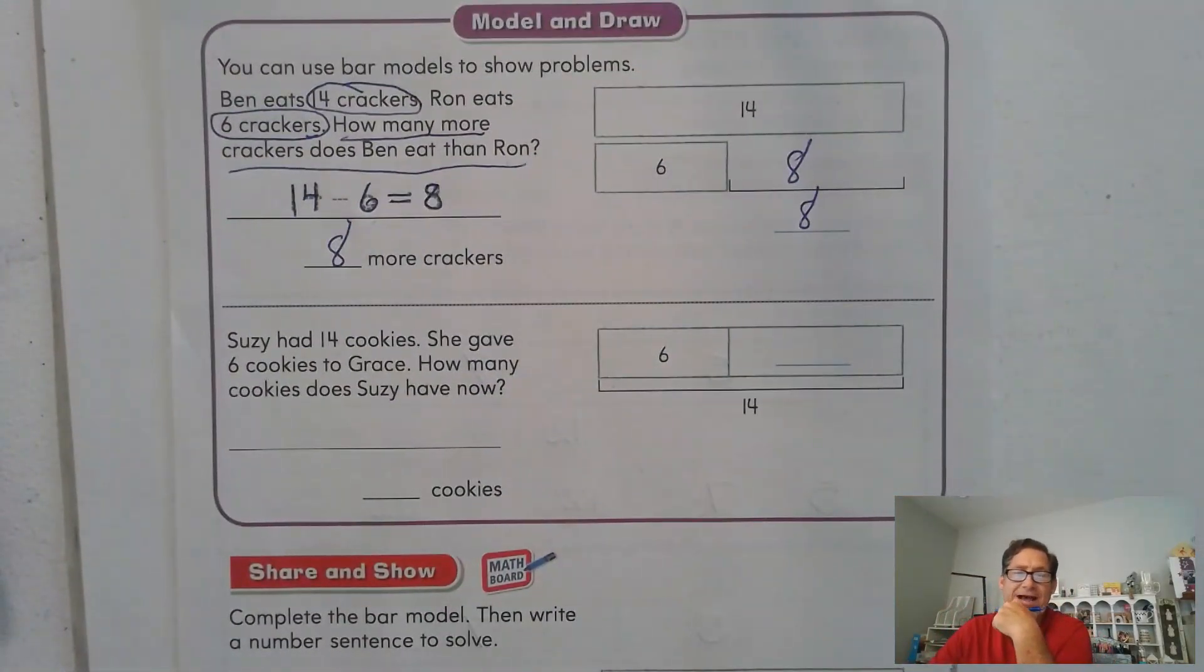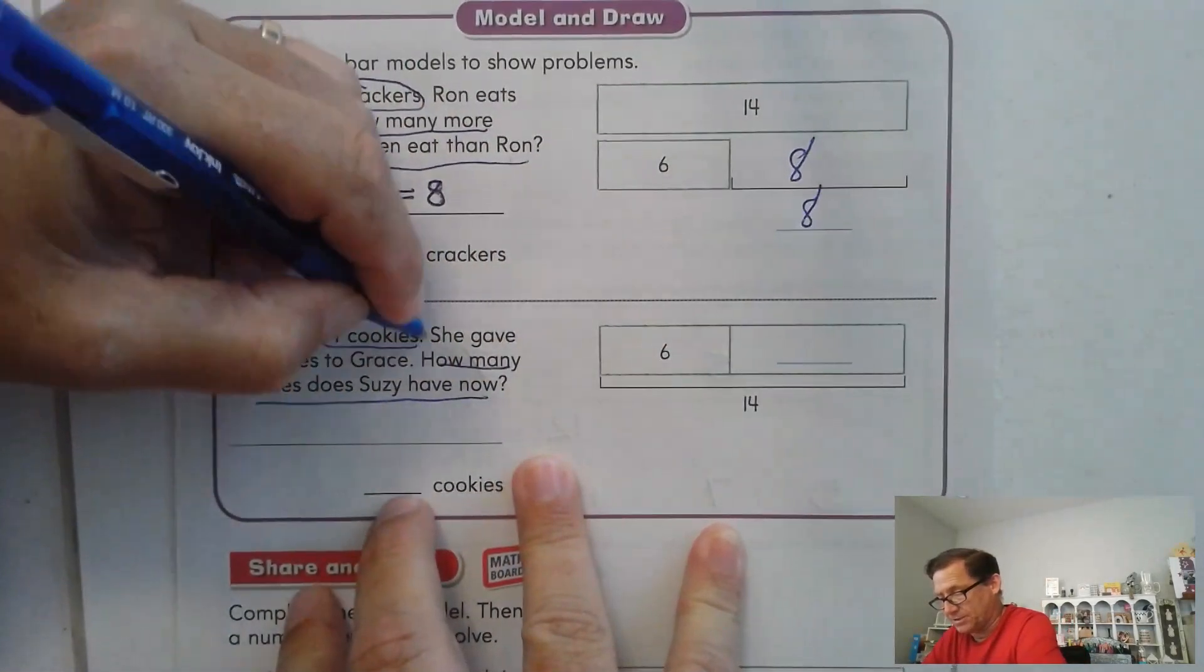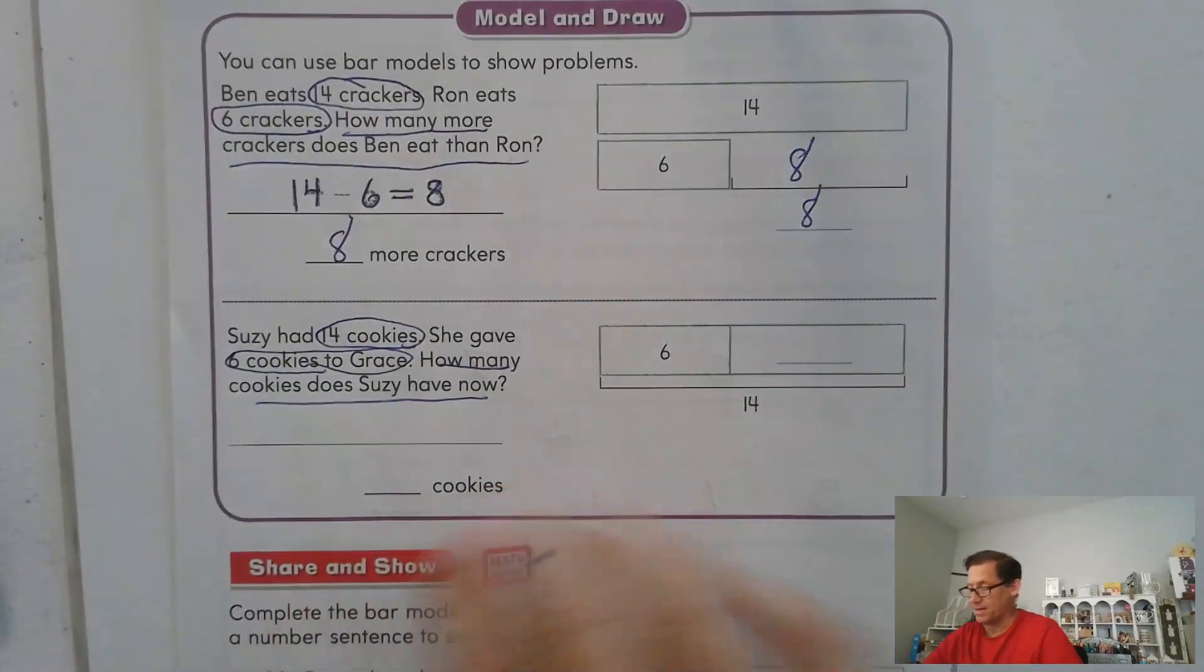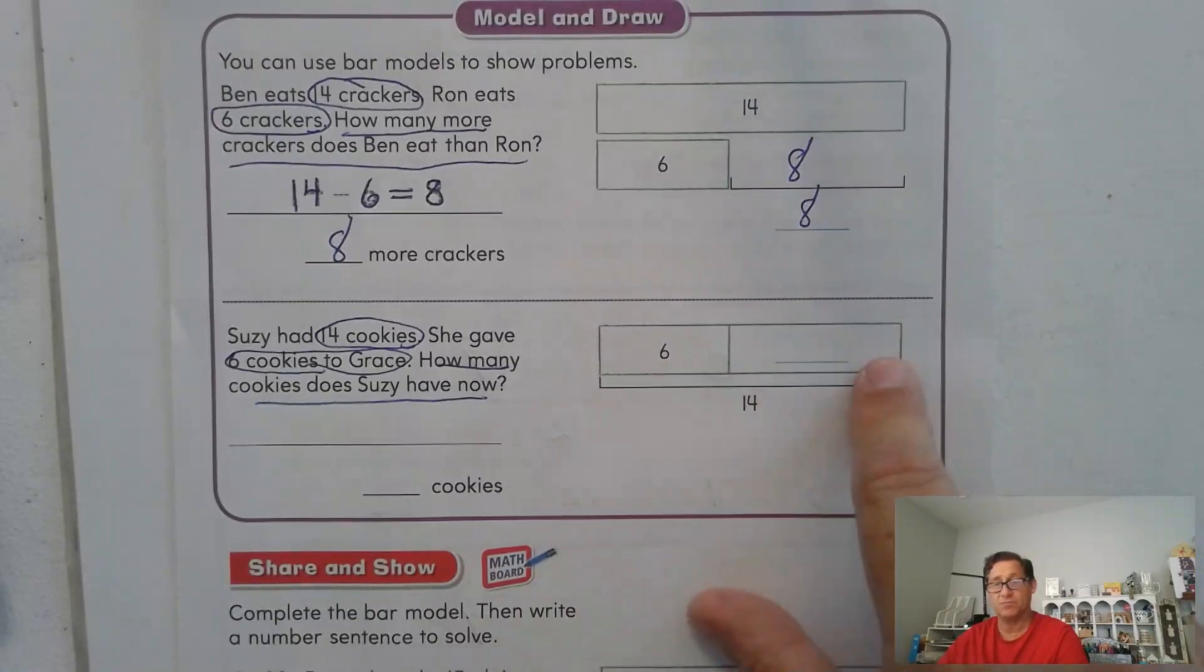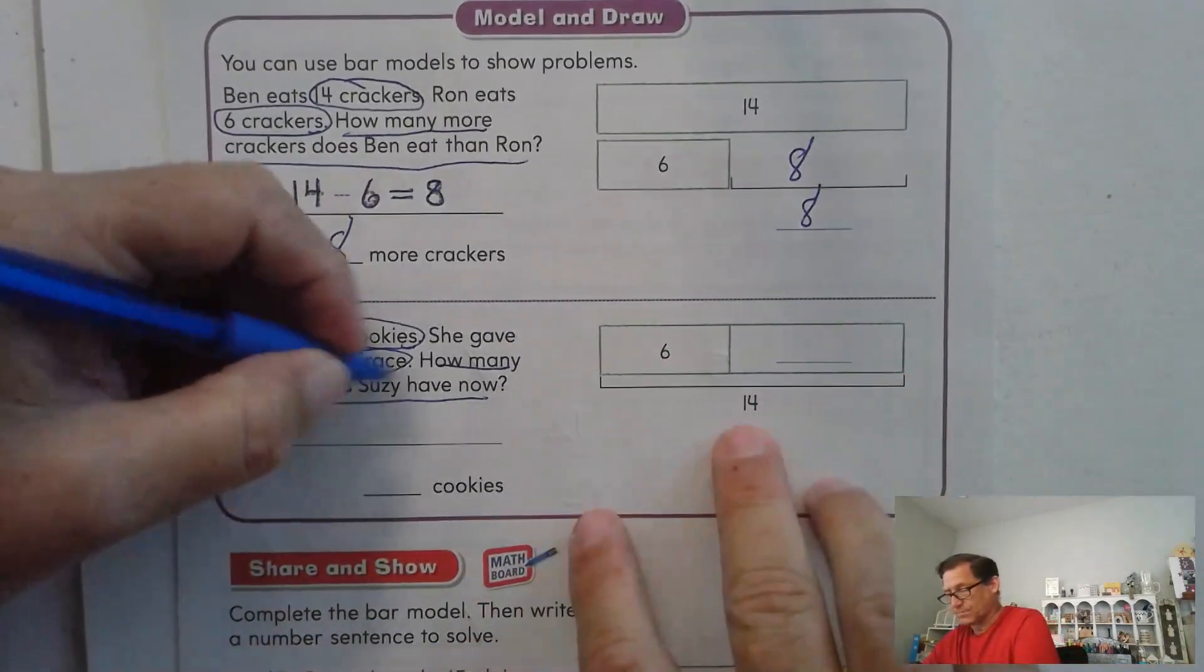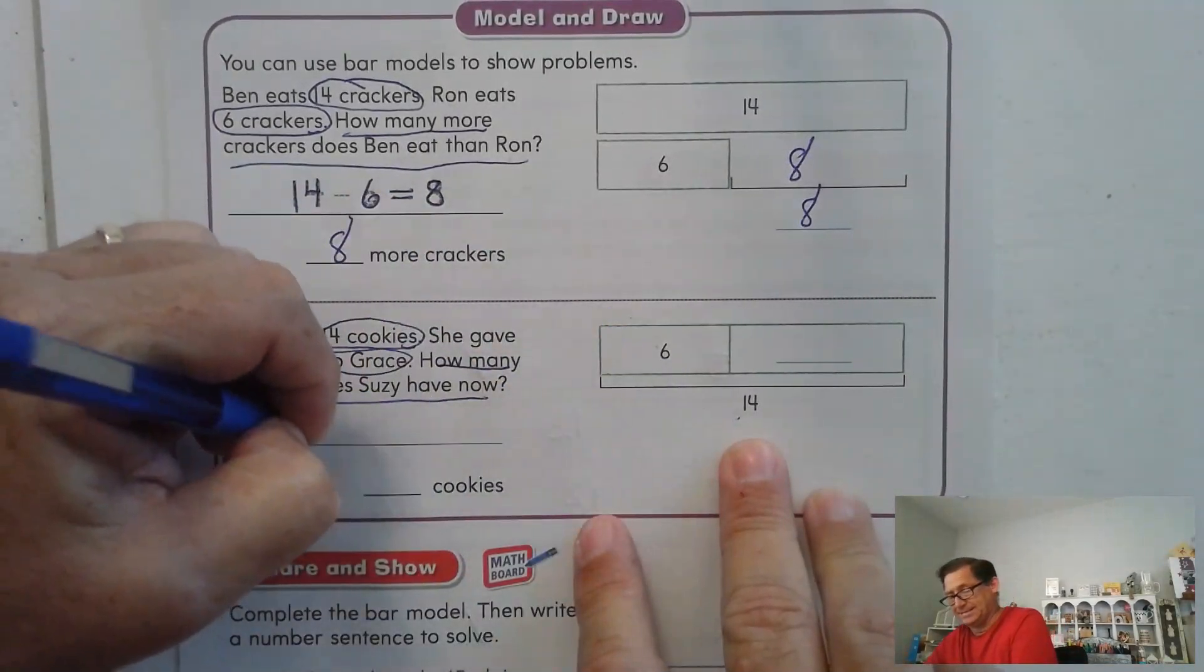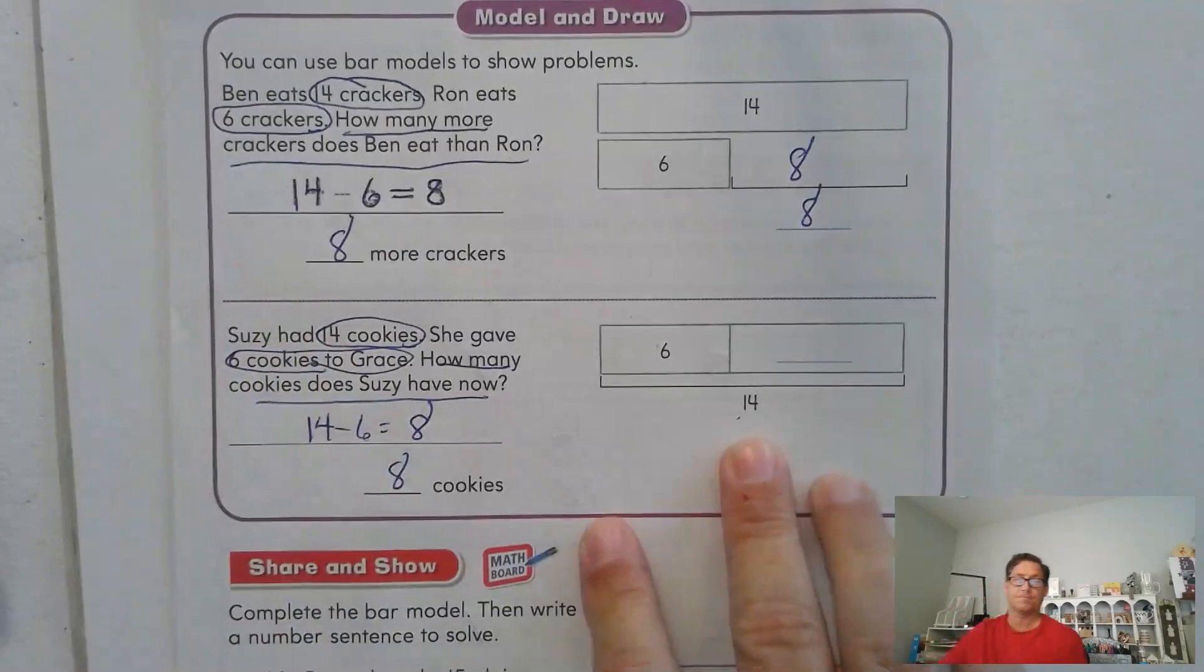All right, let's look at this one. Susie had 14 cookies. She gave six cookies to Grace. How many cookies does Susie have now? Susie had 14 and she gave six to Grace. So this represents her 14 total cookies. The cookies she gave to Grace plus what she does have. Well, it's still a subtraction problem. 14 minus 6 equals, and we already know it's 8.